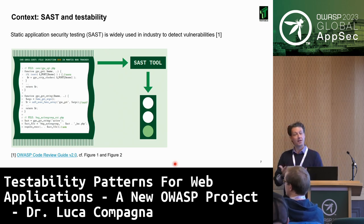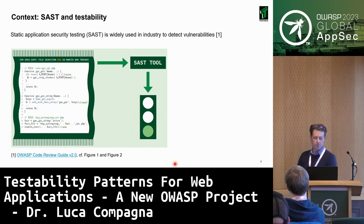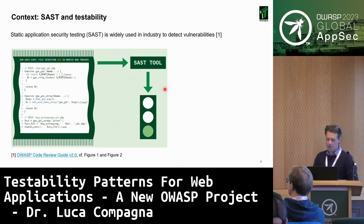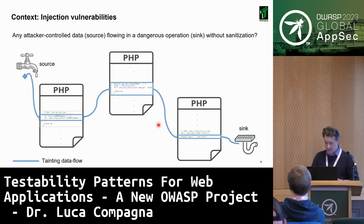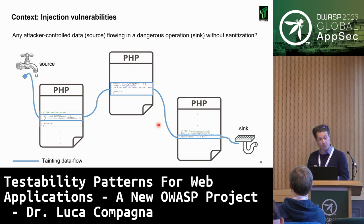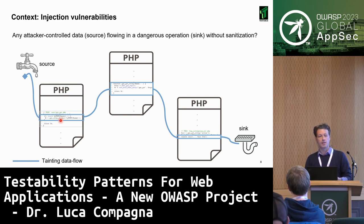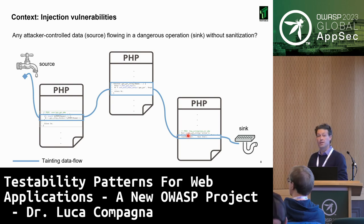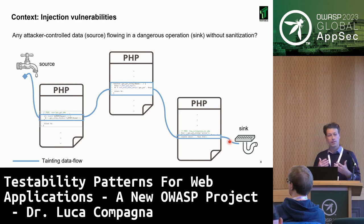Static analysis: many of you have probably worked with it. You have a piece of code, you give it as input to a SAST tool, and the tool provides findings in the form of traffic lights. A very good example is injection vulnerabilities. The static analyzer tries to identify areas where an attacker can introduce input — what we call a source. Then it propagates that data value through the code to check whether it ends up in a dangerous operation — what we call a sink. Everything in between is the data flow the tool needs to follow.